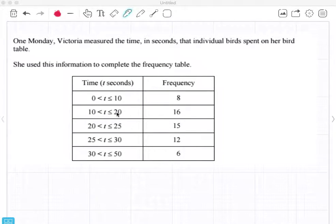We can immediately see that this is 10, 10, 5, 5, 20, so the class widths are different. So it means I can't use a bar chart.